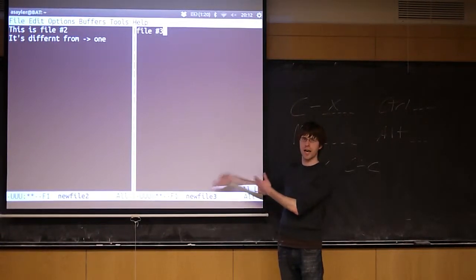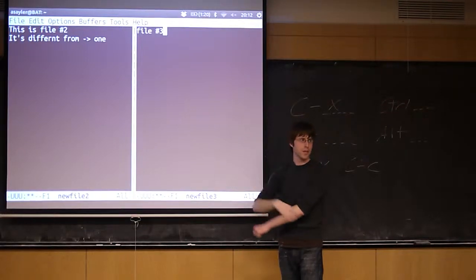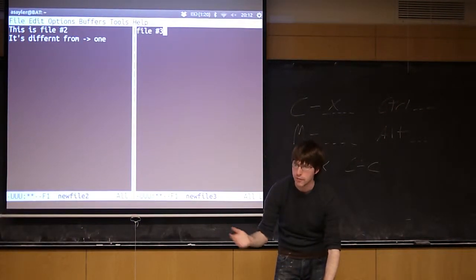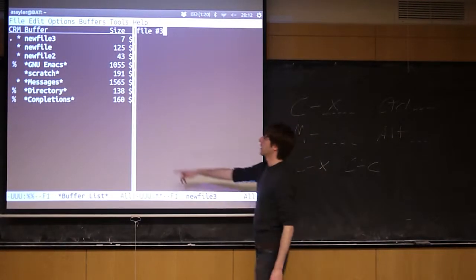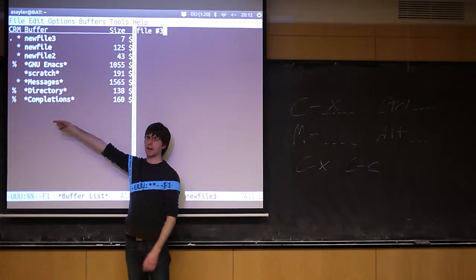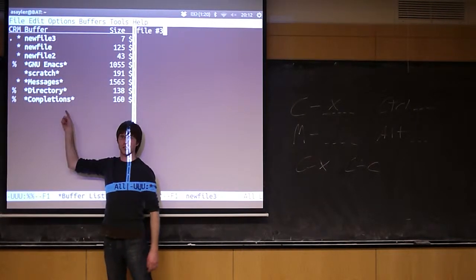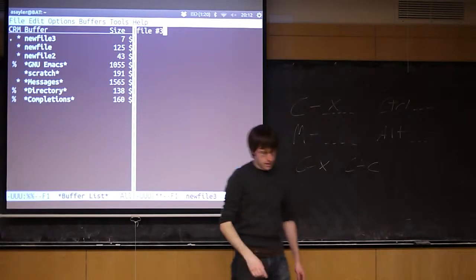If you want to see a list of all the available buffers, everything you have open, Control-X Control-B will essentially show me a list of everything I have. It's the three text files and then these special ones that are just always there.